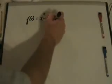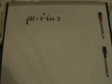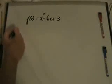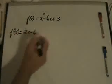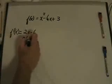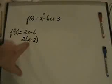Let's start with a simple example. Let's say you have f(x) = x² - 6x + 3, and you're asked to find the local extrema. The first thing I need to do is take the first derivative. The derivative of f(x) is equal to 2x - 6, or to make the math easier, 2 times the quantity (x - 3). My critical point is going to be x = 3, wherever this equals zero.